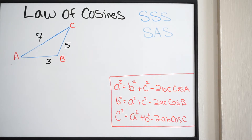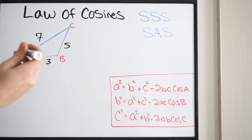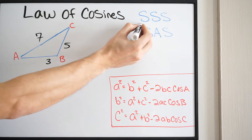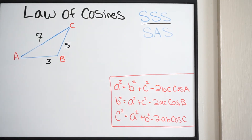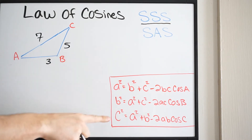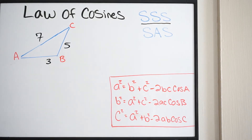That is exactly what we're going to do here. For this particular example, we're only going to do one of these triangles, and we'll do a second video on the other. So in this video we're going to be dealing with side-side-side, and we'll make another video dealing with side-angle-side. Now you can see to the right here we have three equations that we're going to use for our law of cosines.